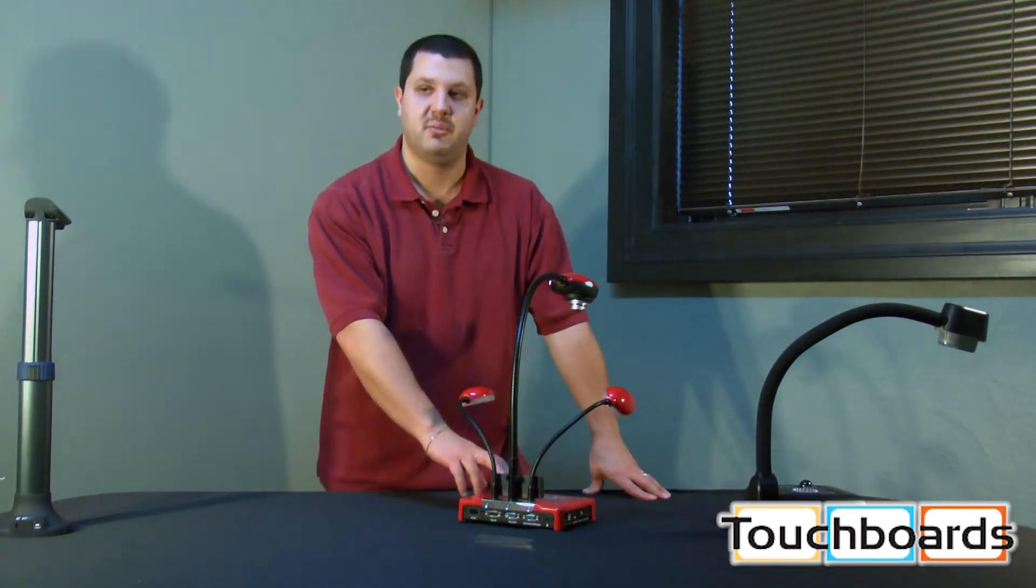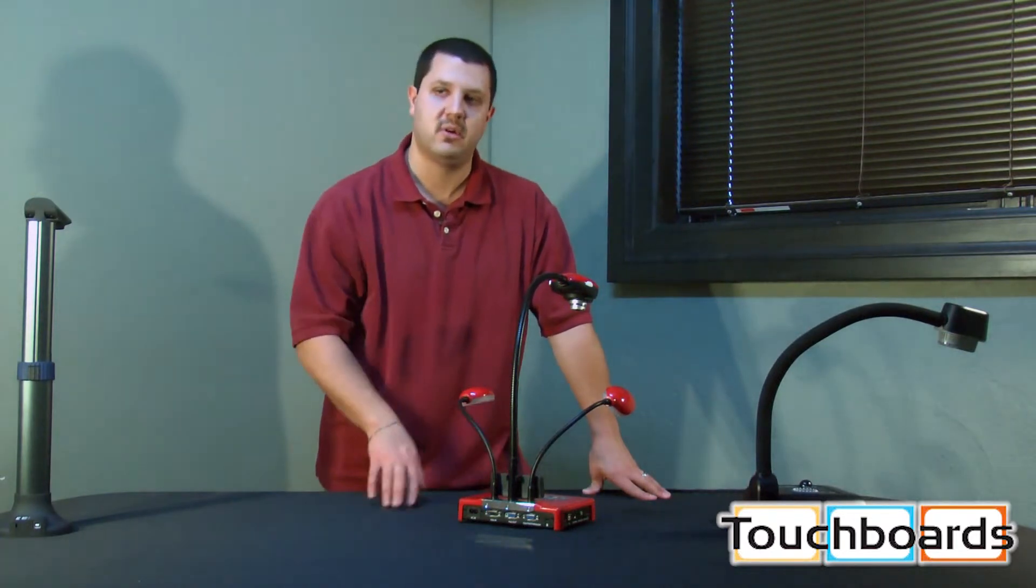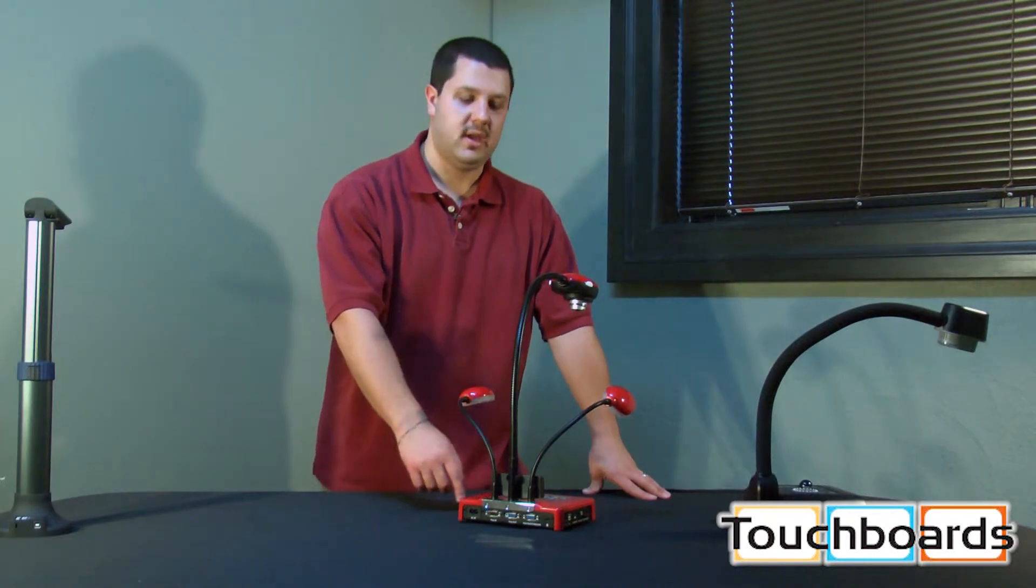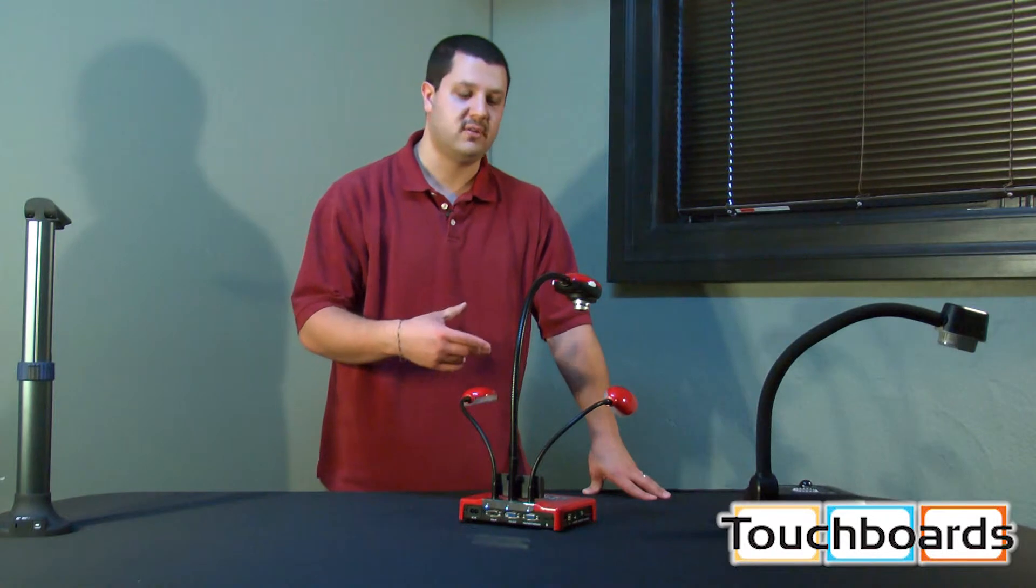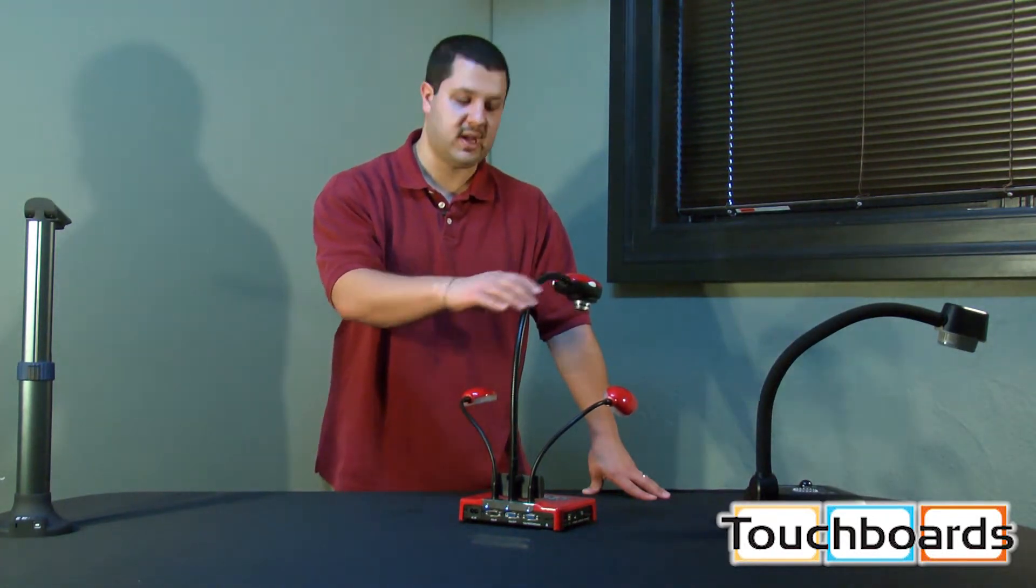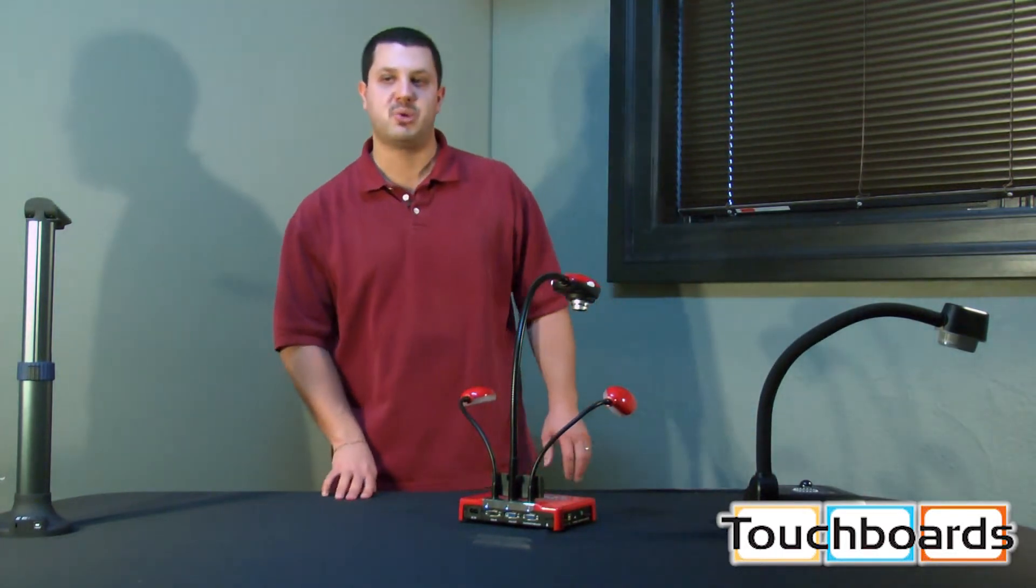On some cameras, it might have a picture of the document camera. On others, it might say camera or something like that, but you basically hit that button, and the device inside the camera itself will switch, and now the projector is picking up the image from the camera. And then you'd go about controlling the camera from the camera as you would if it were directly connected to your projector.